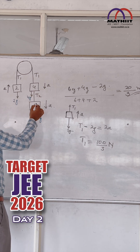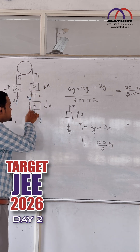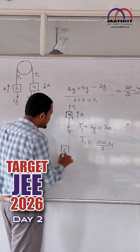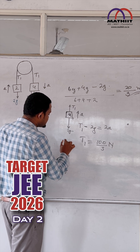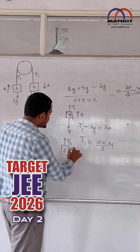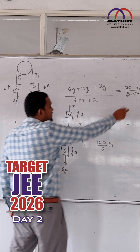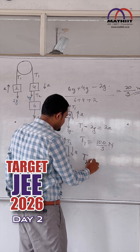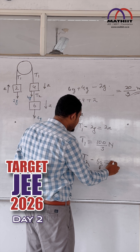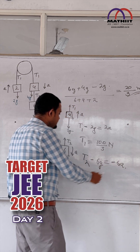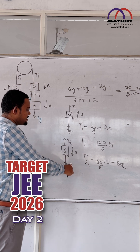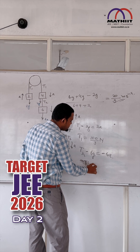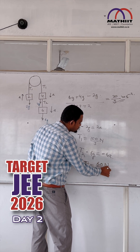Solving this, we get T1 equals 100/3 Newton. Now for T2, let us take the free body diagram of the 6 kg block. We find 6g downwards, T2 upwards, and acceleration a in the downward direction. So T2 minus 6g equals negative 6 times a, because a is in the downward direction. Solving this, we get T2 equals 60/3 Newton.